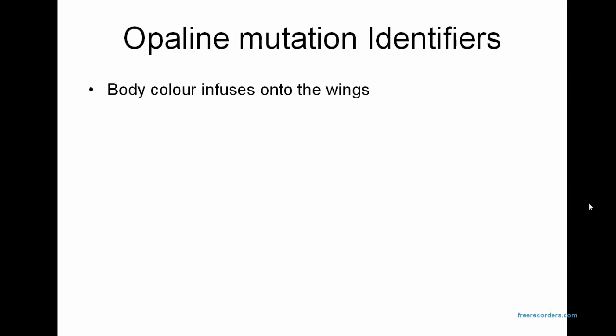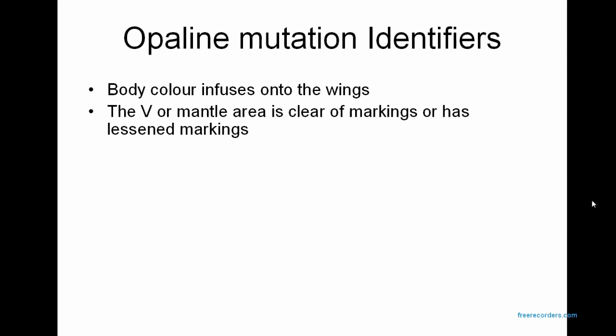The main identifier is that the body colour infuses onto the wings through the V in the mantle area. The World Budgerigars standard says it's not to go through to the main flight feathers — basically just the V in the mantle area should have the body colour infused, with the flight feathers having no colour in them. The V or mantle area is clear of markings, or has lessened markings. The best Opaline will have no marking in the V area, which is the shoulder area between the two wings. If they do have markings there, it doesn't mean they're not an Opaline, it just means they're a badly marked Opaline, because the Opaline refers to the colour infusion which gives an opalescence — that's what the word comes from.